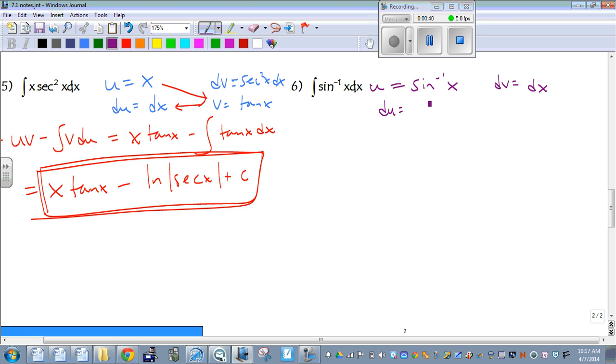du, the derivative of inverse sine, that's the one we did not too long before break, that's going to be 1 over square root of 1 minus x squared. And antiderivative of 1 dx is just going to be x.